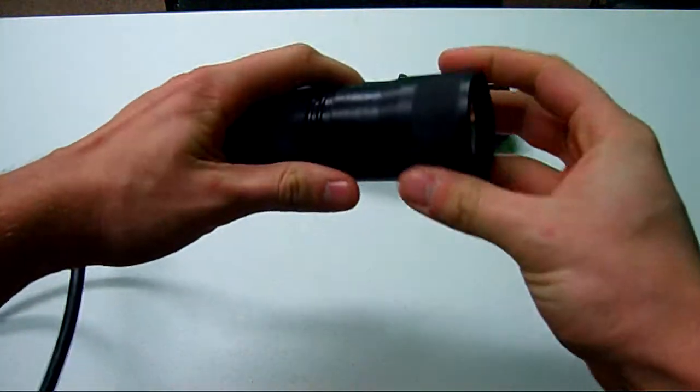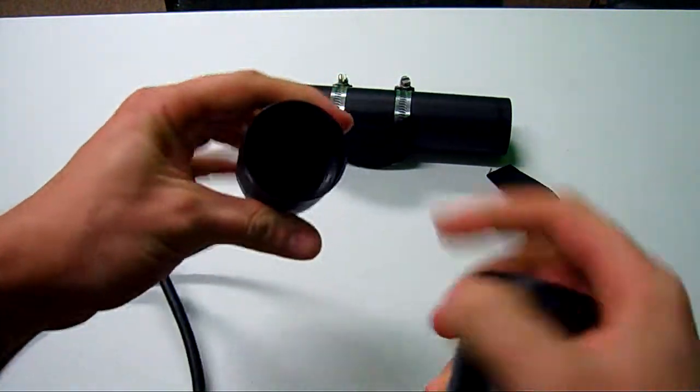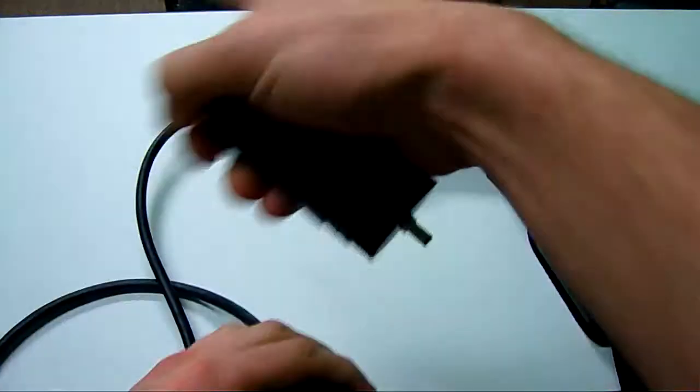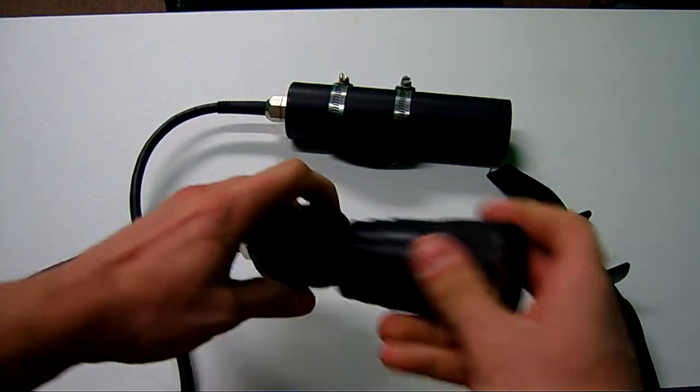How you charge the light, you can see that this light head twists off, double-o ring design. Your charger hooks up right through here. It's a sealed system in the battery for charging.